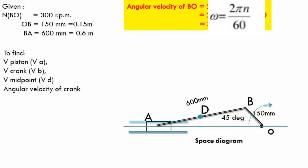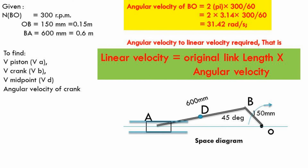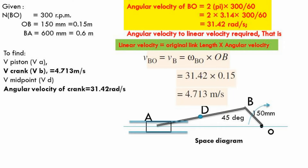Now we are going to find the angular velocity of the crank — that is omega of BO. The formula is 2πN divided by 60. Here, the given RPM is 300. By substituting, the angular velocity becomes 31.42 radians per second. After that, we find the linear velocity of the crank. From the angular velocity, we can find the linear velocity using the formula: link length into angular velocity, that is omega BO × OB. Substituting the values, we get the linear velocity of 4.713 meters per second.